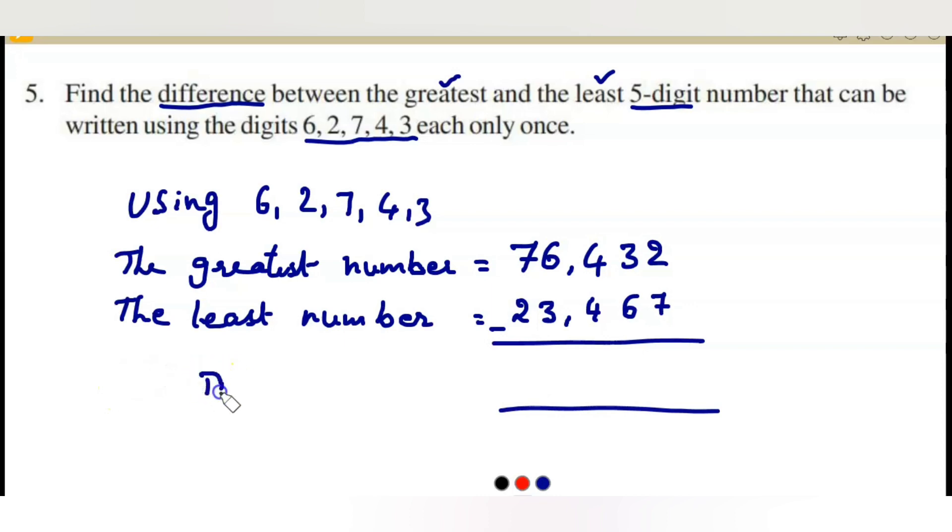We need to find the difference between these two numbers. The difference is equal to, 2 becomes 12 and 3 becomes 2. 12 minus 7 is 5, 2 minus 6 again not possible. Let us borrow, 3 and this is 12. 12 minus 6 is 6 and 3 minus 4 not possible again. Borrow 5 and 13, 13 minus 4 is 9, next 5 minus 3 is 2 and 7 minus 2 we can directly write as 5. So the answer is 52,965.